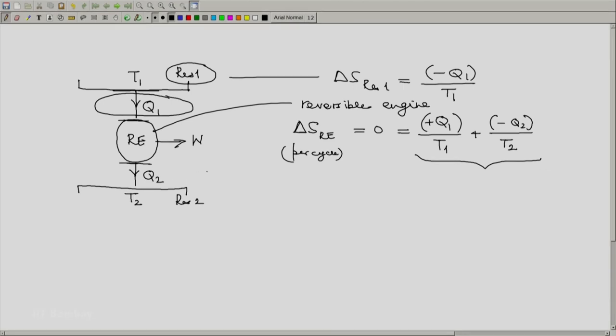And in a similar fashion, this heat transfer is also reversible. So takes place at 0 temperature difference essentially. So the temperature here is T2. For this reservoir, delta S reservoir 2 will be heat absorbed by that reservoir, which is plus q2 divided by T2.